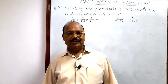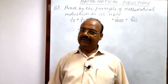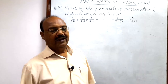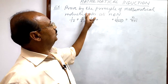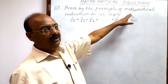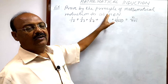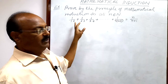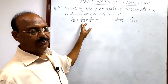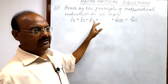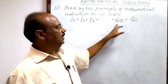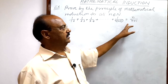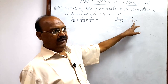Here we will see a very interesting and important question from the chapter mathematical induction. The question is: prove by the principle of mathematical induction for all n belonging to the set of natural numbers: 1/(1×2) + 1/(2×3) + 1/(3×4) + ... + 1/(n×(n+1)) = n/(n+1).